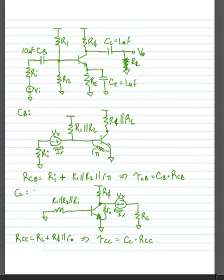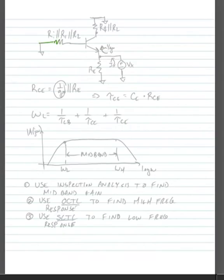The last step in the analysis is to look at the capacitor CE, and we can make an equivalent circuit. At the base, we have RI in parallel with R1 in parallel with R2. At the emitter, we have our resistor RE. And we're going to replace CE with a voltage source Vx and measure the current Ix that flows through that voltage source.